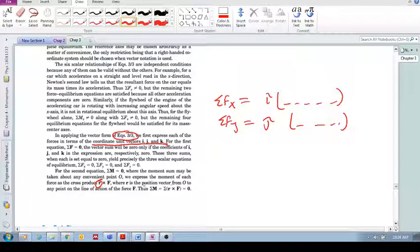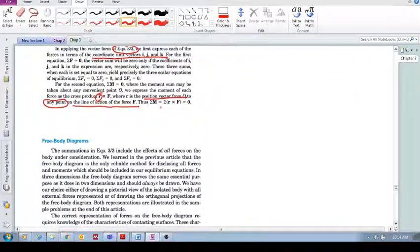From, which is a position vector from point O, to remember this guy, any point, any point on the line of action of the force. Okay? So the sum of the moments is equal to the sum of r cross f. Okay? But we'll look at some examples.